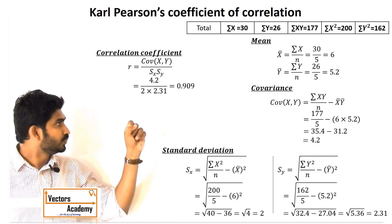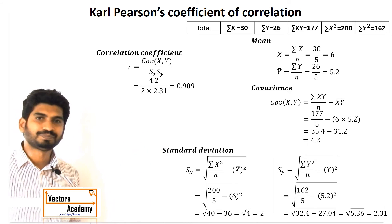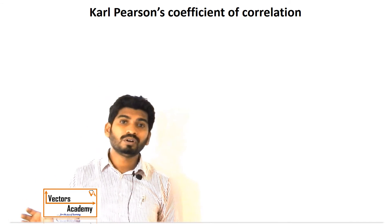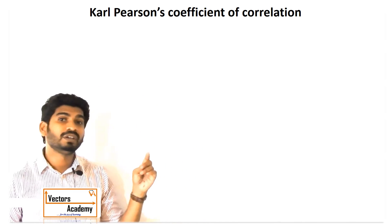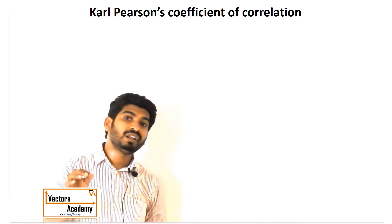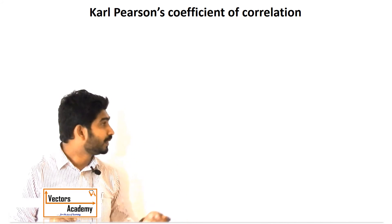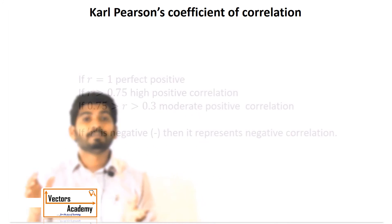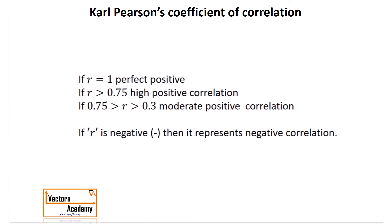The value of r comes to 0.909. The closer this value is to 1, the more correlated the variables are. Since 0.9 is very close to 1, the marks of maths and science are highly correlated. This means if a student is good in maths, there is a very high chance he is also good in science. This is the basic significance of the value of r.